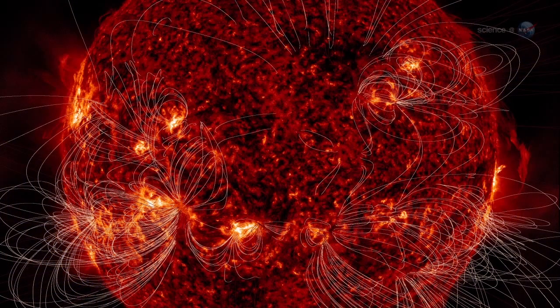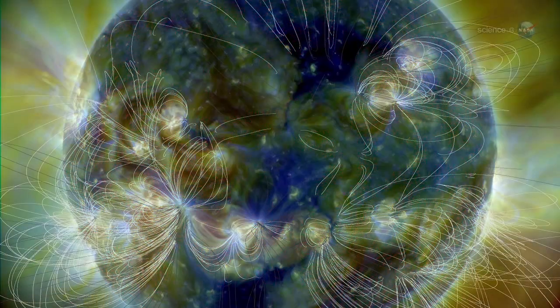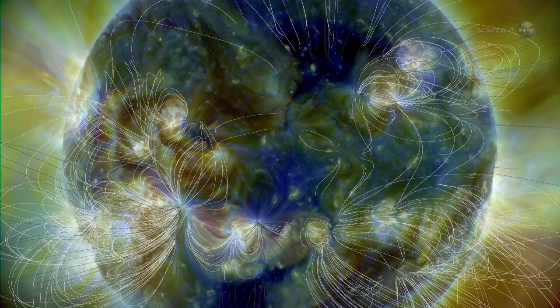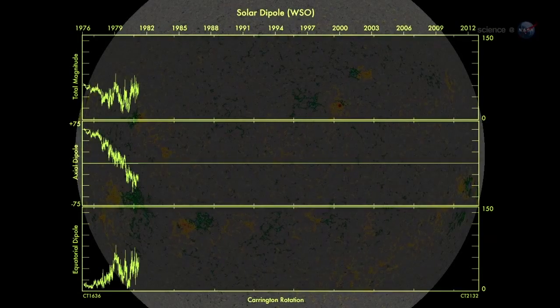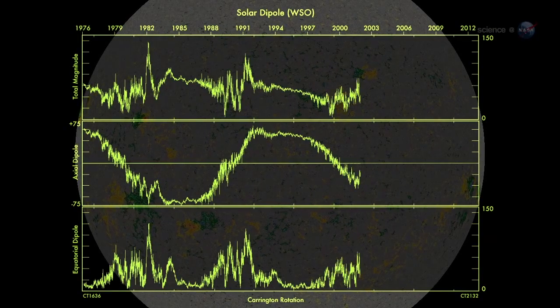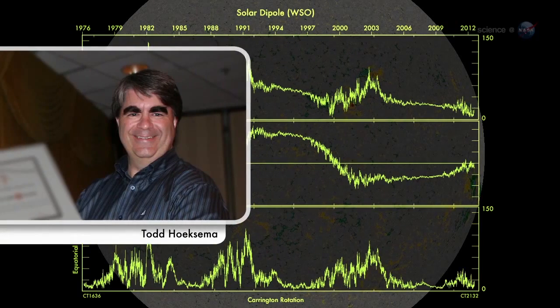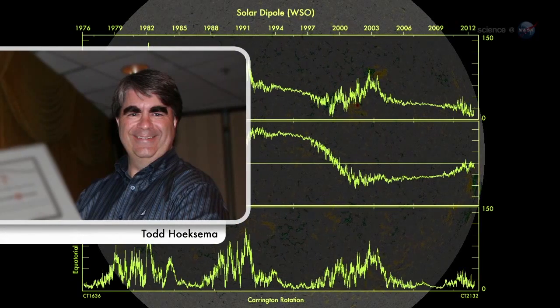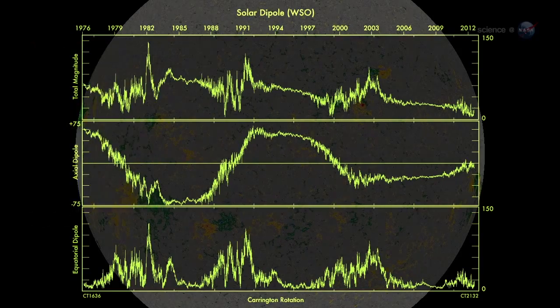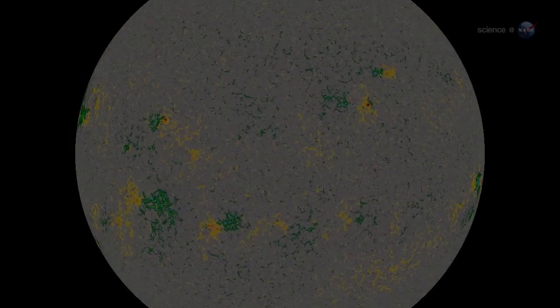According to measurements from NASA-supported observatories, the Sun's vast magnetic field is about to flip. It looks like we're no more than three to four months away from a complete field reversal, says solar physicist Todd Huxama of Stanford University. This change will have ripple effects throughout the solar system.